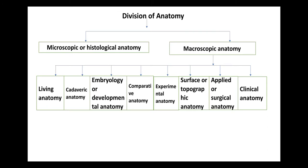Microscopic or histological anatomy means study of anatomical parts with the help of a microscope. This includes the study of cells, tissue, different sections — sections of artery, veins, nerve, muscle, bone, eye, intestine — any part of the body studied with the help of a microscope is called histological or microscopic anatomy.